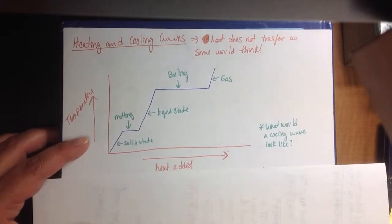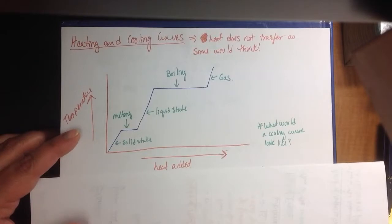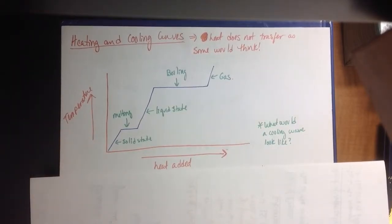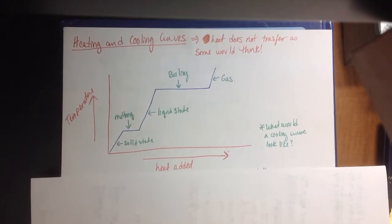There are equations for each of these states. This has its own equation for how much heat it takes to get here. This has its own for how much heat it takes to get here. This has its own for how much heat it takes to get here. Same here and here. And every substance has its own values for that. That you have to be given. Or you don't know how to do these things.